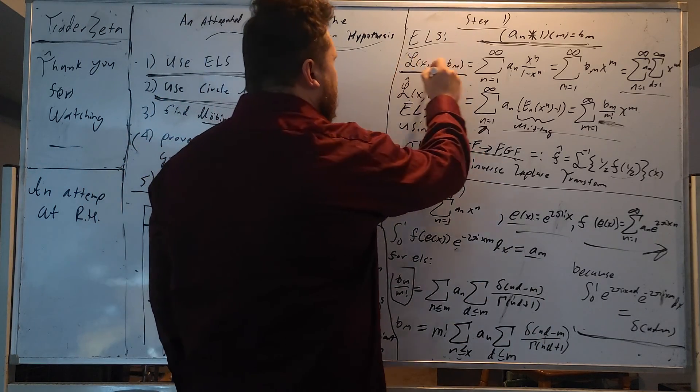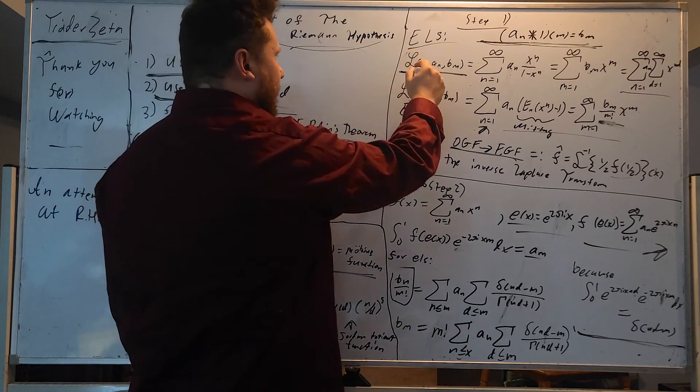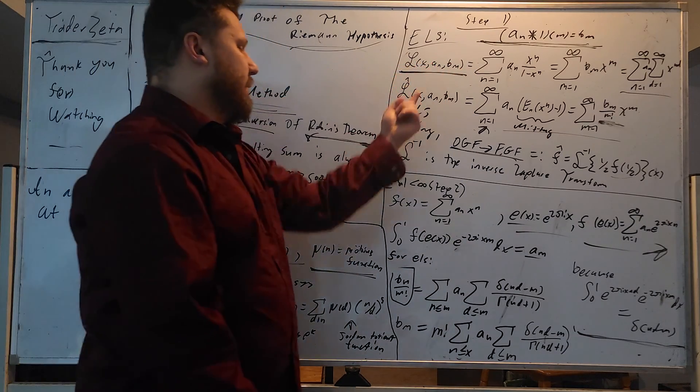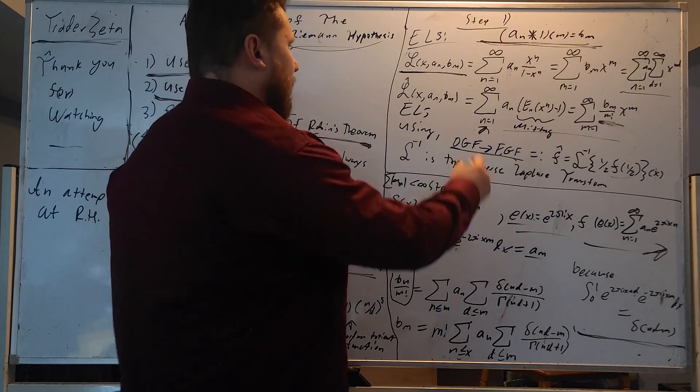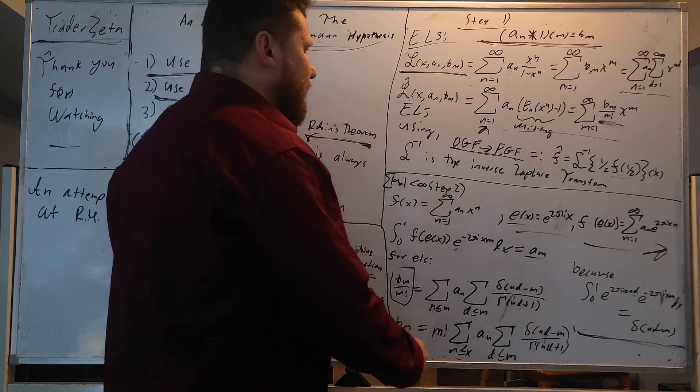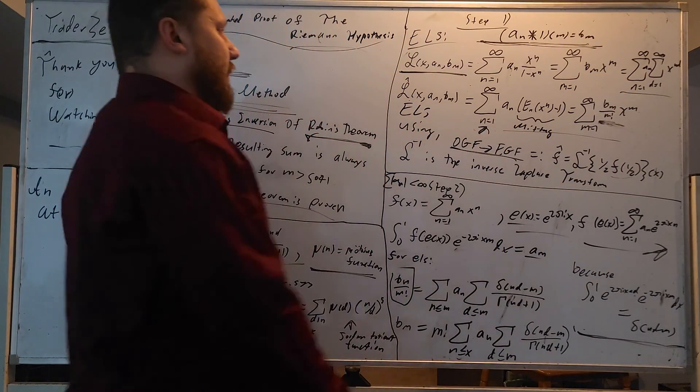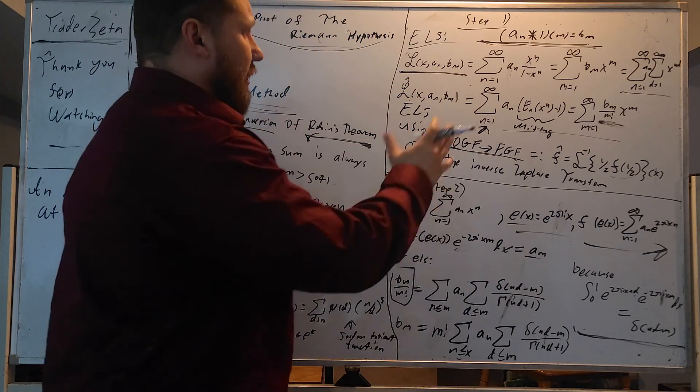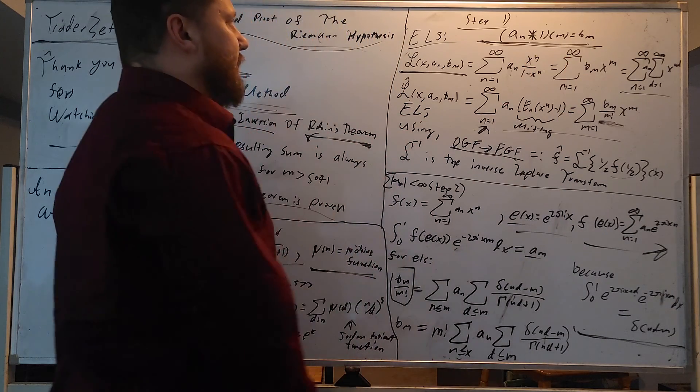Now Dirichlet convolution is a very deep result in mathematics. We're not going to cover it here because a lot of the a sub n's and b sub n's are well known. You can just look them up online. They're pairs, they're proven, we don't have to worry about them too much. So here is the classic Lambert series.